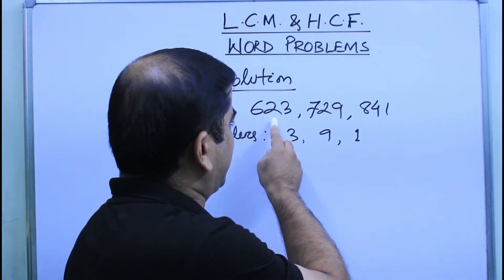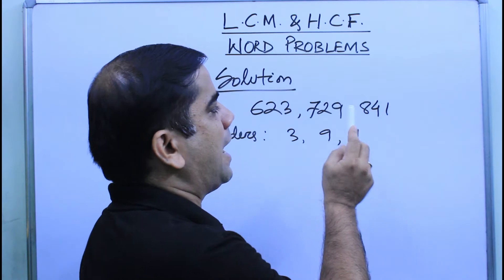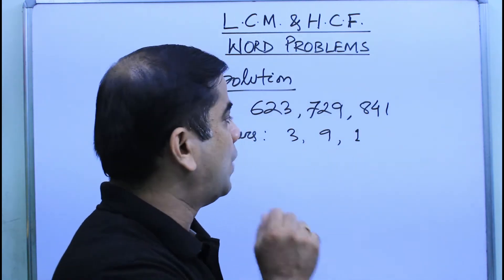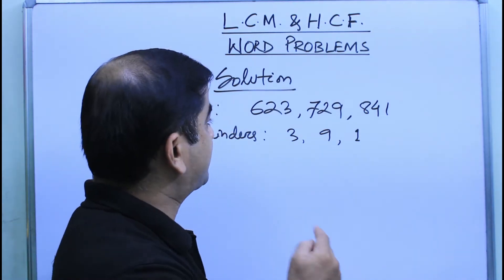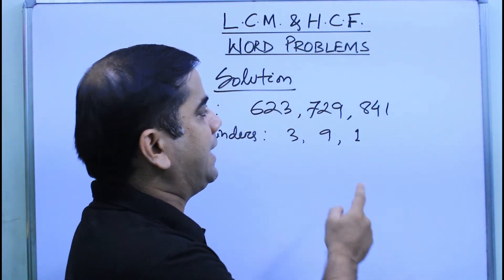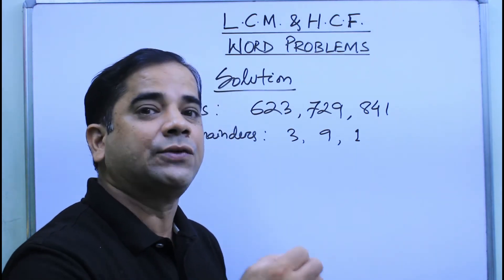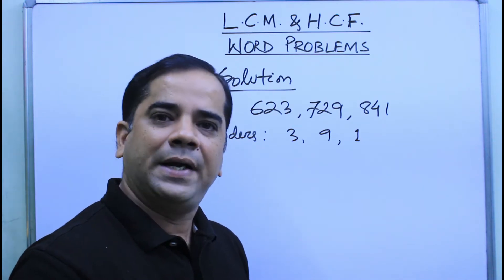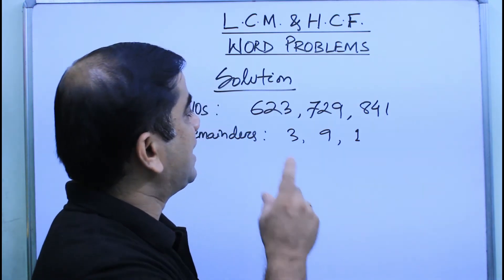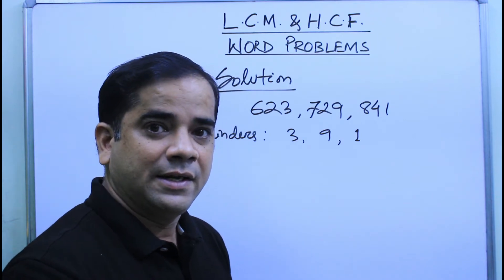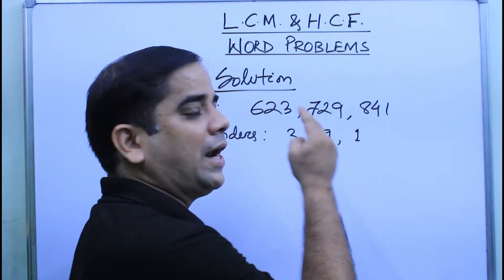The highest number we are going to find will divide 623 leaving remainder 3, 729 leaving remainder 9, and 841 leaving remainder 1. Since 3, 9, and 1 are remainders in each case, when we subtract them from their respective numbers and find the HCF, those results will be completely divisible by that HCF. And when those numbers are completely divisible, the originals will leave remainders 3, 9, and 1 respectively.